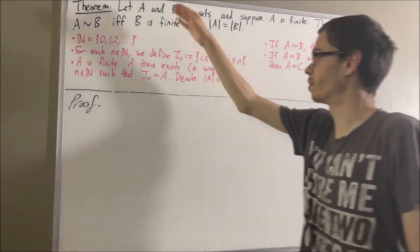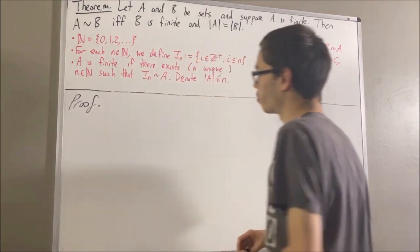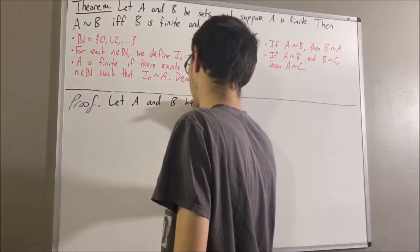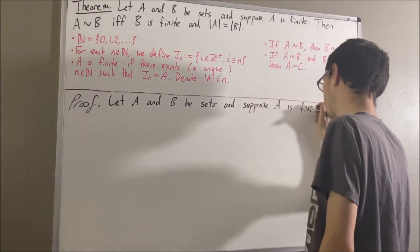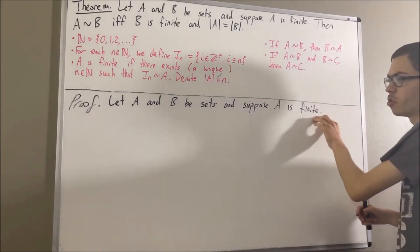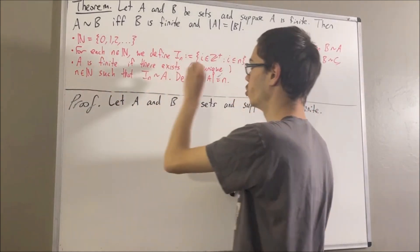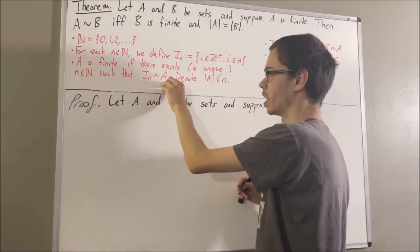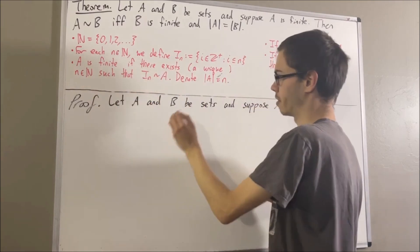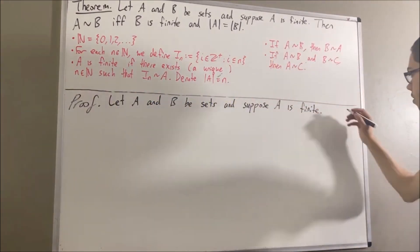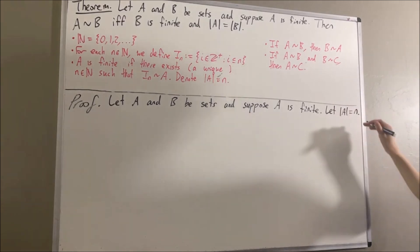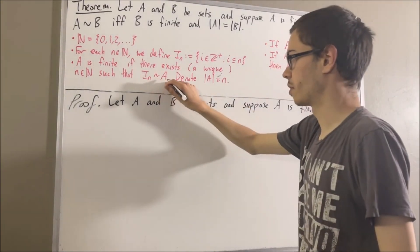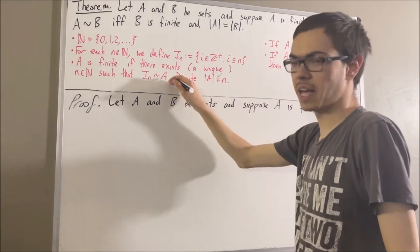Now let's get into proving the theorem. To start out the proof, let's give ourselves two sets A and B, and let's suppose A is finite. Since A is finite, we know that A is assigned to a unique natural number n which satisfies this condition. We'll call that natural number n and denote it like this. In other words, n is the unique natural number which satisfies this condition — there exists a bijection from I_n to A.